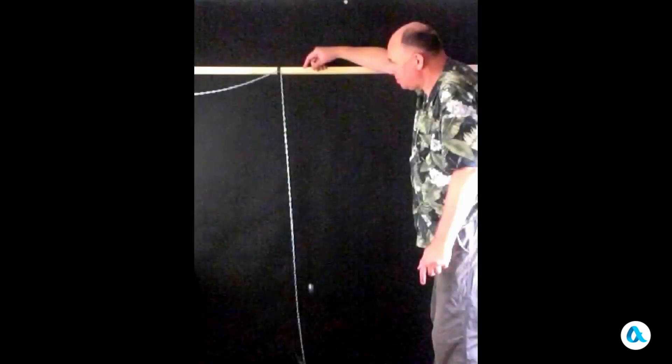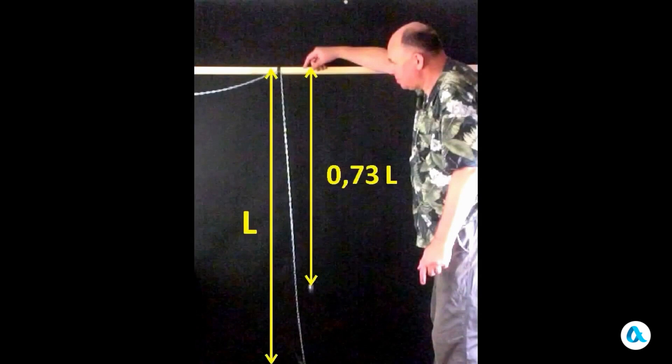Let's take a look at the frame at the moment when the chain is fully straightened. If we denote the length of the chain as L, then at this moment the ball has traveled a distance 0.73L. Let's remember this number.